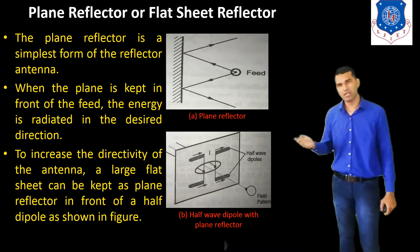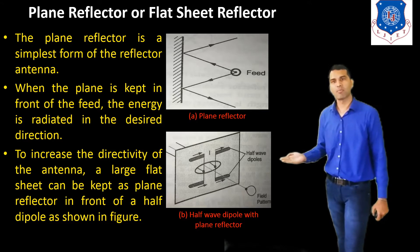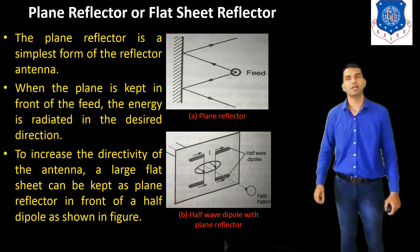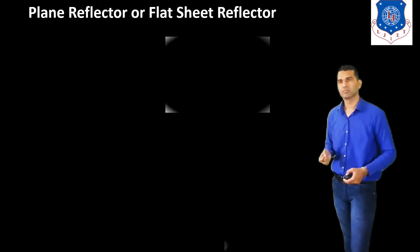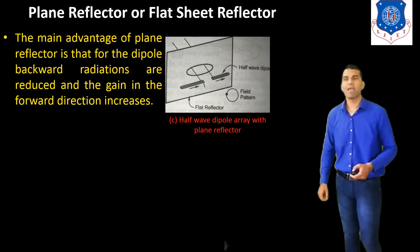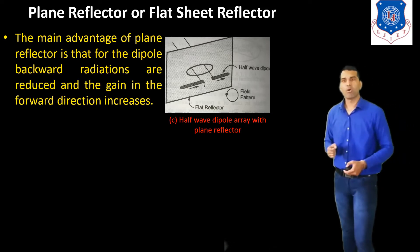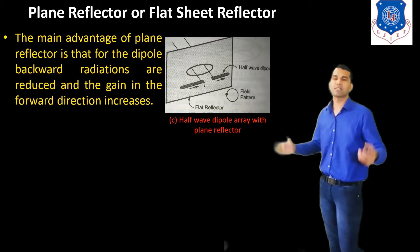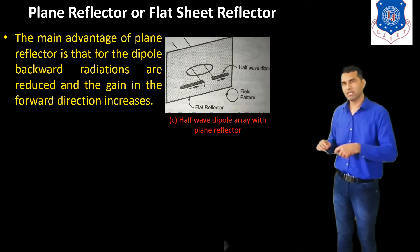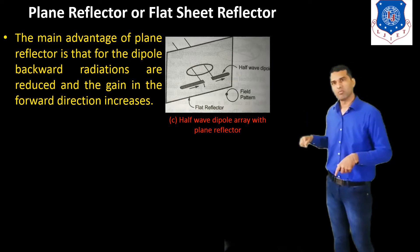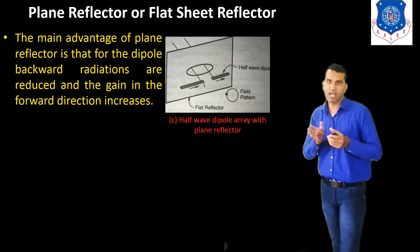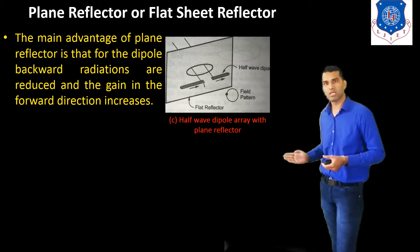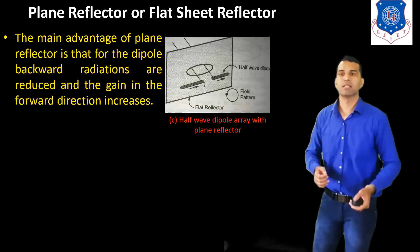Here the primary antenna used is the half-wave dipole antenna — we can see the plane sheet reflector and in front of it we have placed the half-wave dipole antenna. The main advantage of the plane reflector is that the dipole backward radiation is reduced and the gain in the forward direction is increased. We know that the dipole radiates in both directions, but we require radiation in only the front direction. So we use this type of plane reflector to reduce backward radiation and increase energy in the front side.